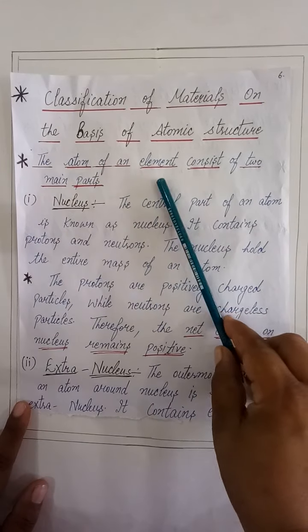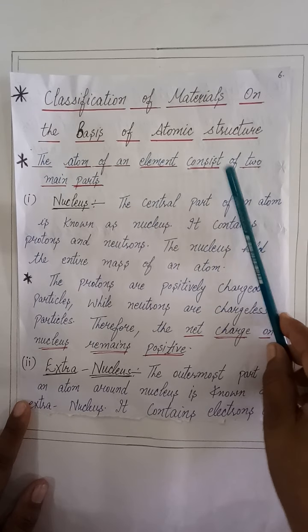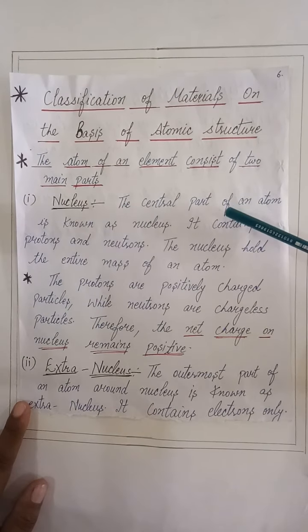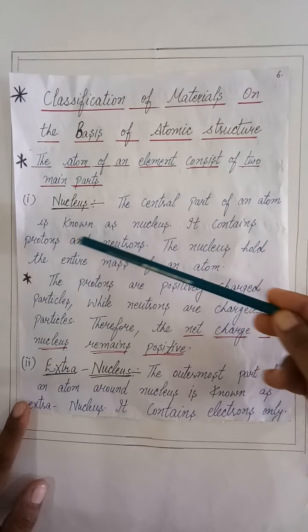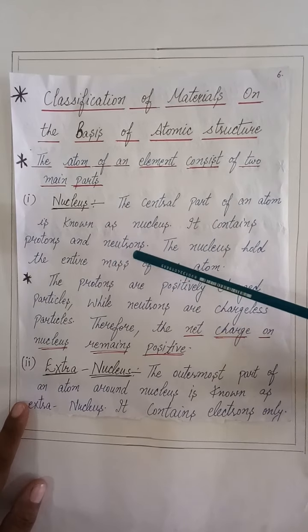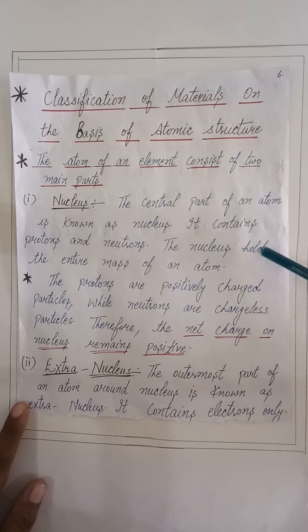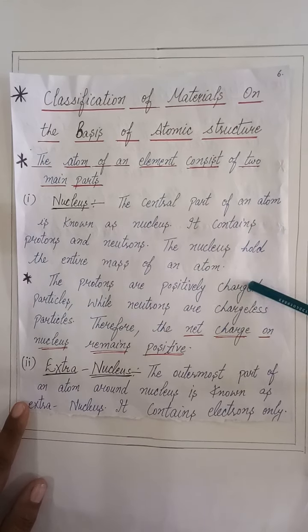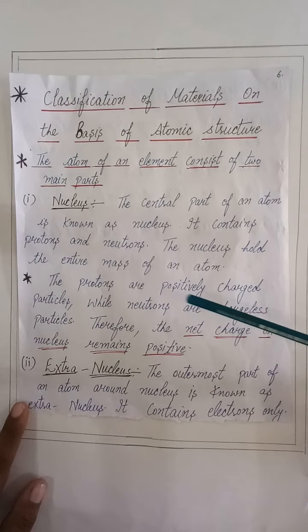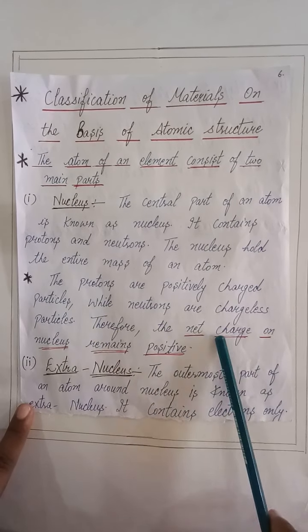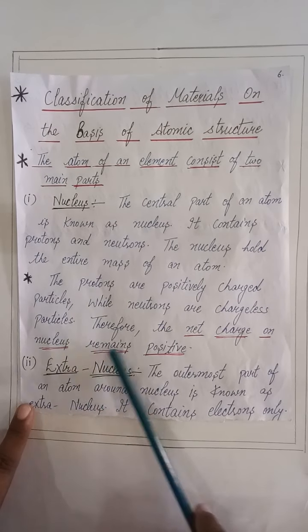The atom of an element consists of two main parts: first is the nucleus, second is the extranuclear. The central part of the atom is known as nucleus. It contains protons and neutrons, and the nucleus holds the entire mass of an atom. The protons are positively charged particles, while the neutrons are chargeless particles. Therefore, the net charge on the nucleus remains positive.